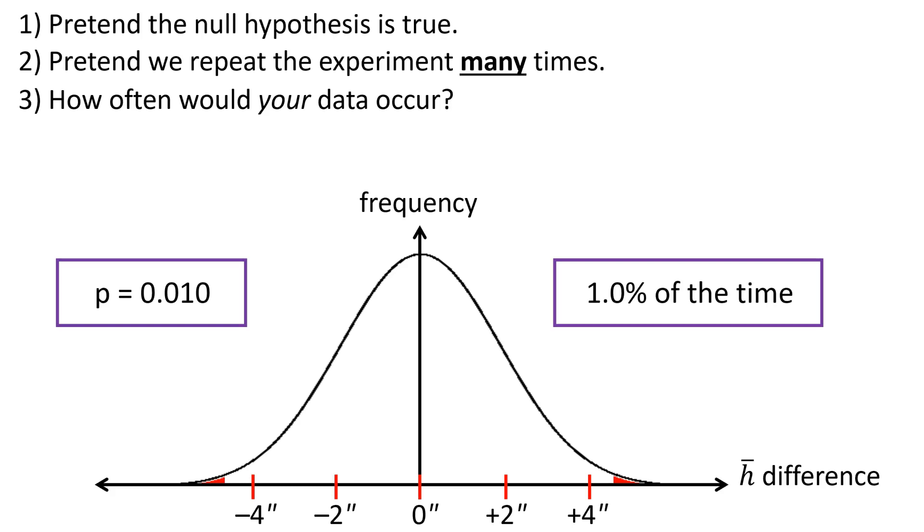If the null hypothesis thinks that you got really lucky, and you just happened to measure this incredibly rare random result, then that makes the null hypothesis a bad theory. It's simply not plausible, it's too far-fetched.